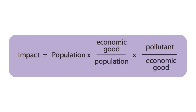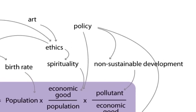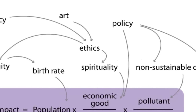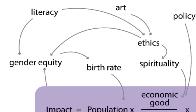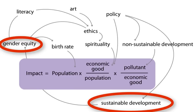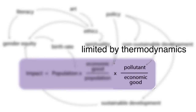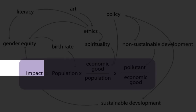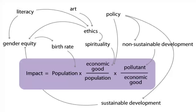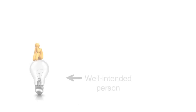One way to create more options for higher impact interventions is to expand the boundaries of the problem. In this image, we use the notation of causal loop diagrams to show how the IPAT variables are influenced by a number of other variables. Each arrow shows a causal connection. For example, sustainable development in a society is correlated with greater gender equity, which leads to lower birth rates and reduced population. While technology efficiency is limited by the laws of thermodynamics, things like gender equity, literacy, art, ethics, and spirituality are not mathematically limited. These areas of intervention do not necessarily require new investments of energy or materials, but do require attention to the human influences on system behavior.